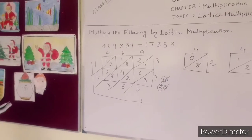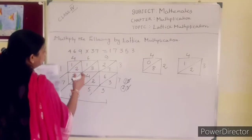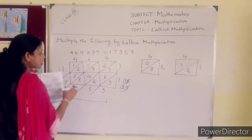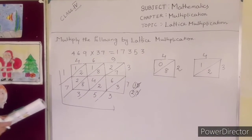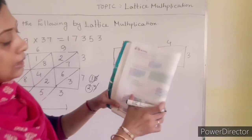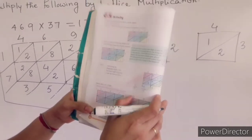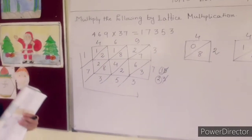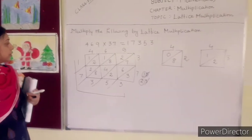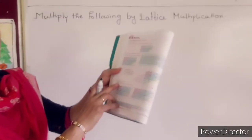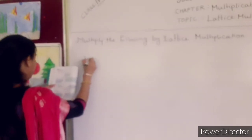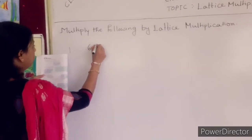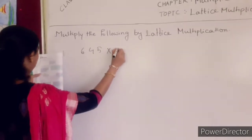Clear? All of you watch this video carefully. First watch the video, then you have to solve this one. Now here are 2 multiplications you have to do in your book — multiply the following by the lattice method, numbers 1 and 2. Only number 1 I will solve for you; the other one you will do in your copy. Now I am going to solve the multiplication by lattice method: 645 into 49.